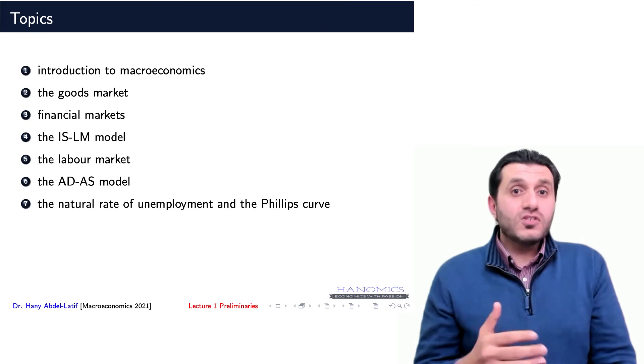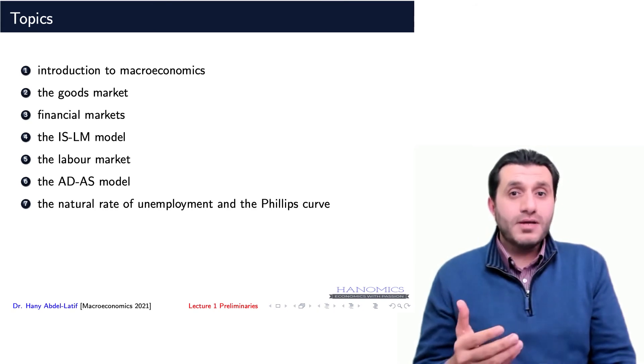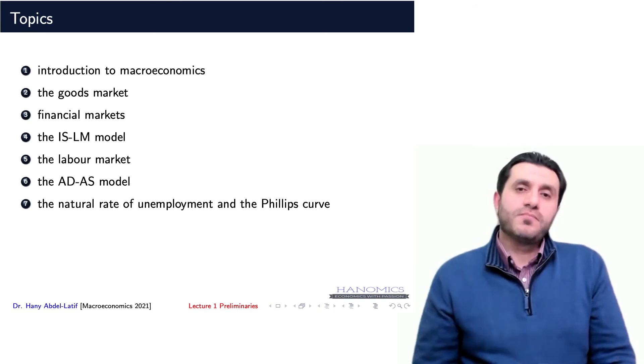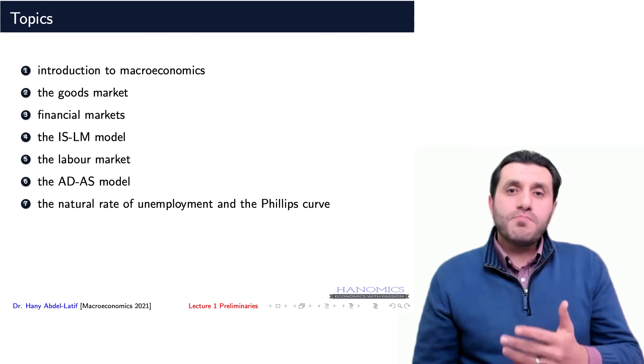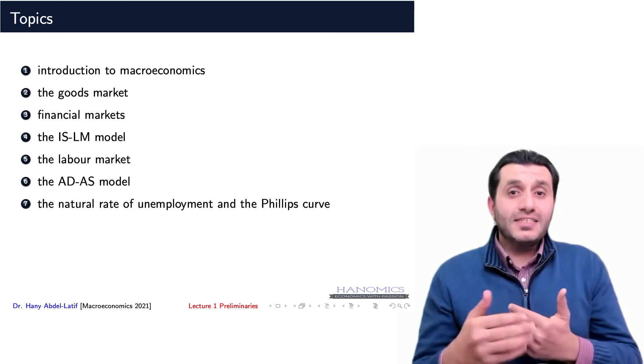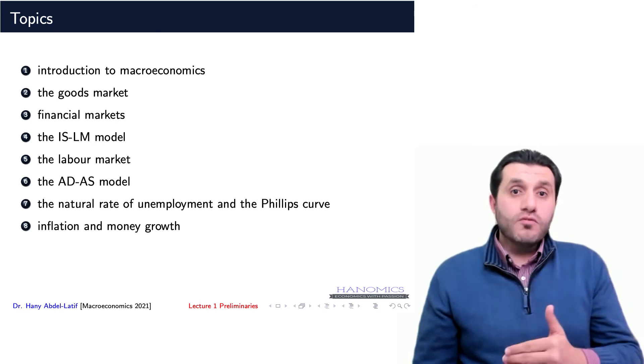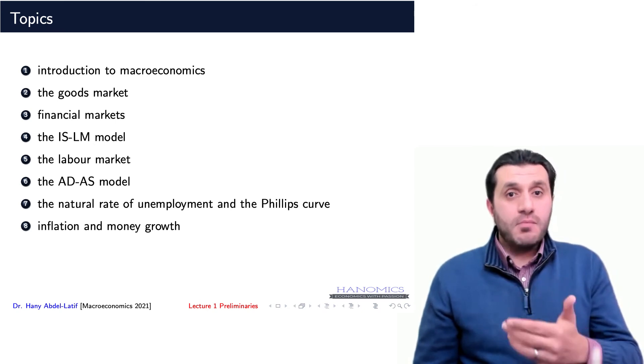Topic number seven covers the natural rate of unemployment and the Phillips curve, showing the relationship between unemployment and inflation rate. Then we will move to study inflation and economic growth.